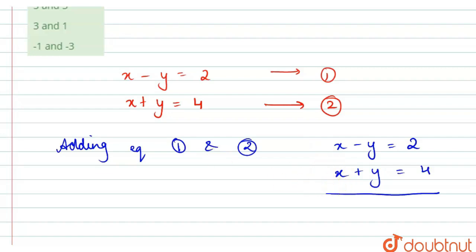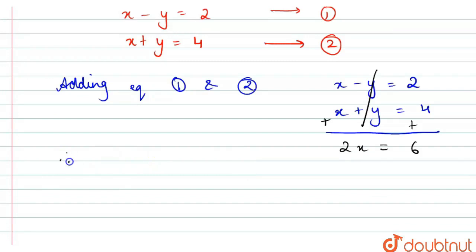The y terms cancel out, and we get 2x equals 2 plus 4, which is 6. Therefore, 2x equals 6, and x equals 6 divided by 2, which is 3.